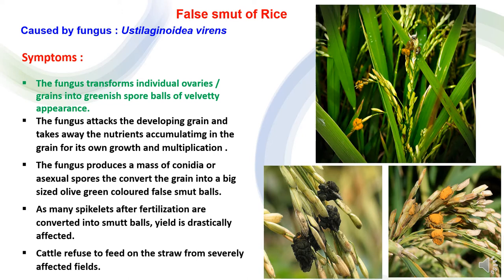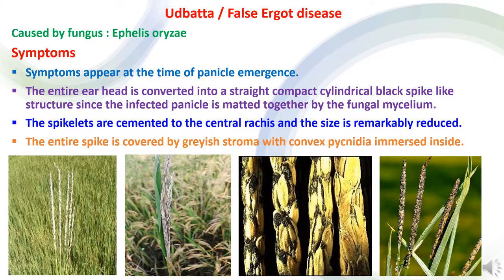False smut disease is caused by the fungus Ustilaginoidea virens. The fungus causes transformation of ovaries or grains into greenish spore balls of velvety appearance. The fungus absorbs nutrients from the grain for its multiplication. Yield is drastically affected as many spikelets after fertilization are converted into smut balls, causing great impact on quality.